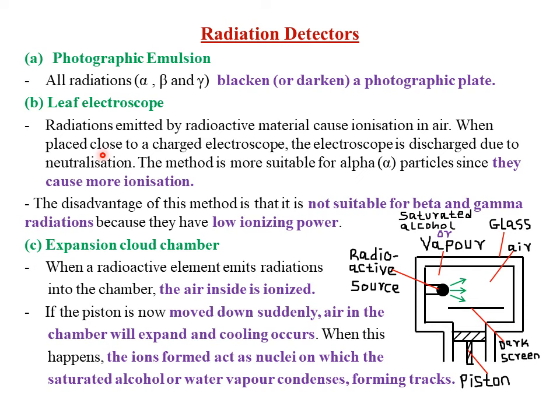Therefore, the expected observation is that there will be a reduction in the divergence of the leaf electroscope. Similarly, if you bring ionized air to the brass cap of a negatively charged electroscope, the same observation will be made because the positive charges within the ionized air are going to attract the negative charges on the electroscope. Once neutralized, the electroscope will be losing some charges, so we expect a reduction in the divergence of the leaf.